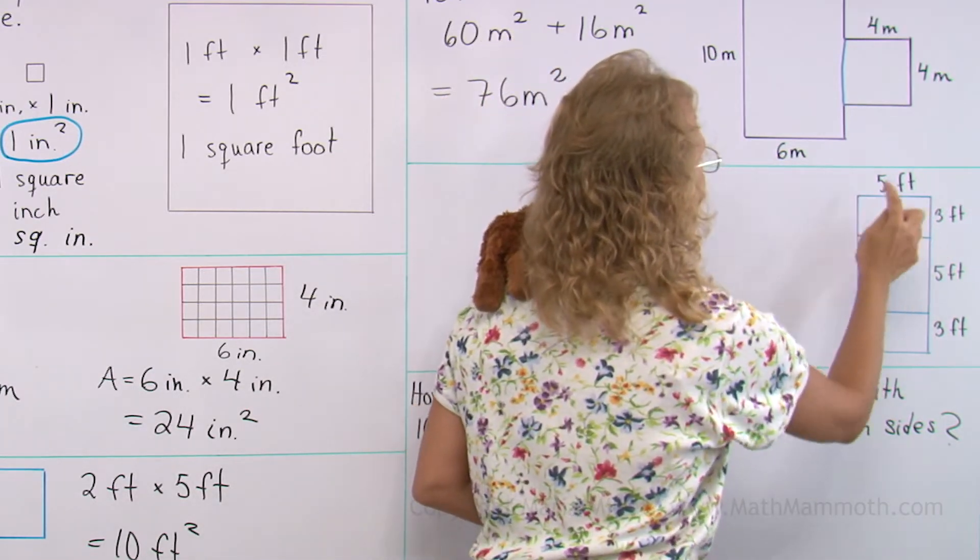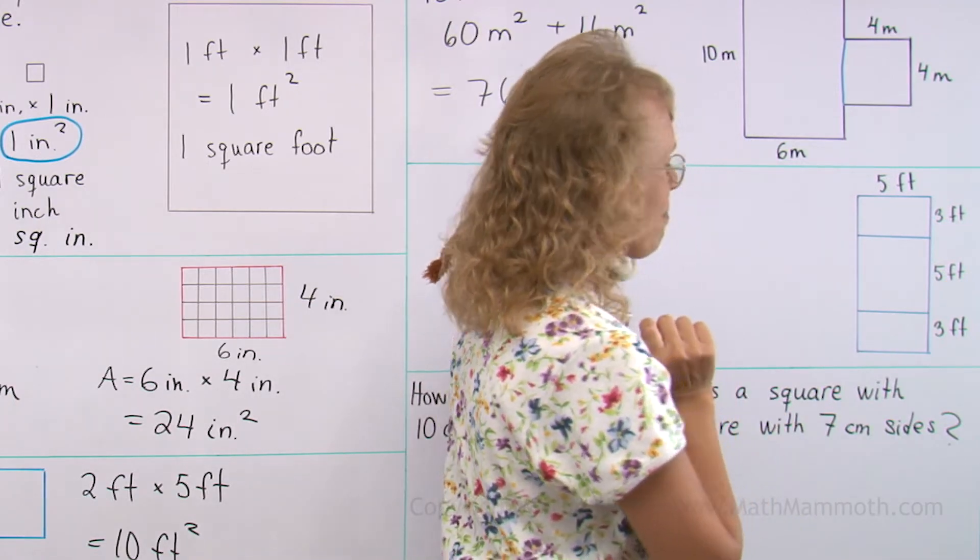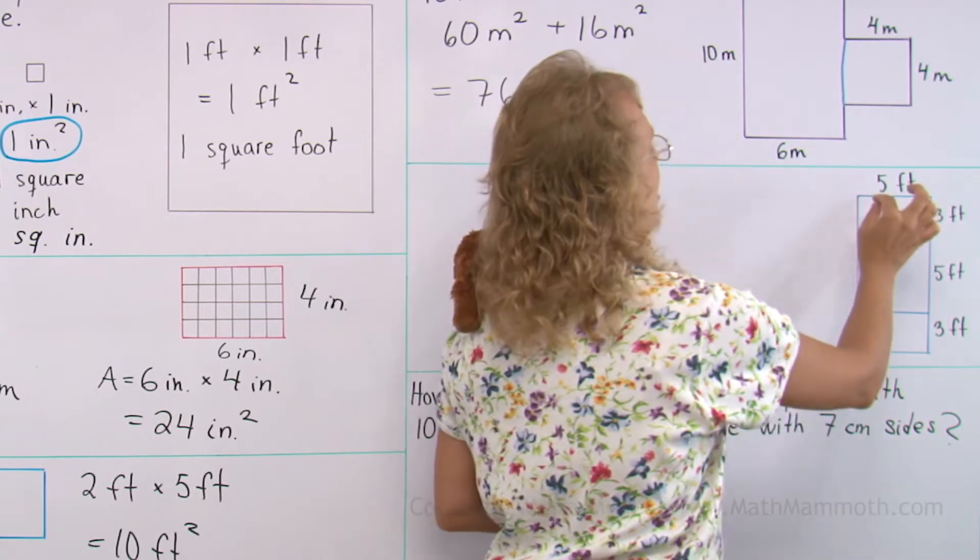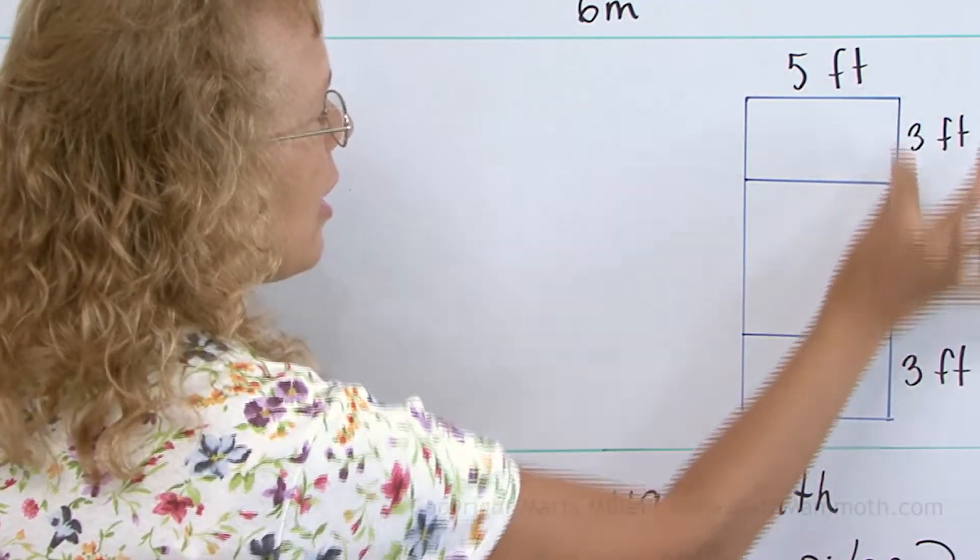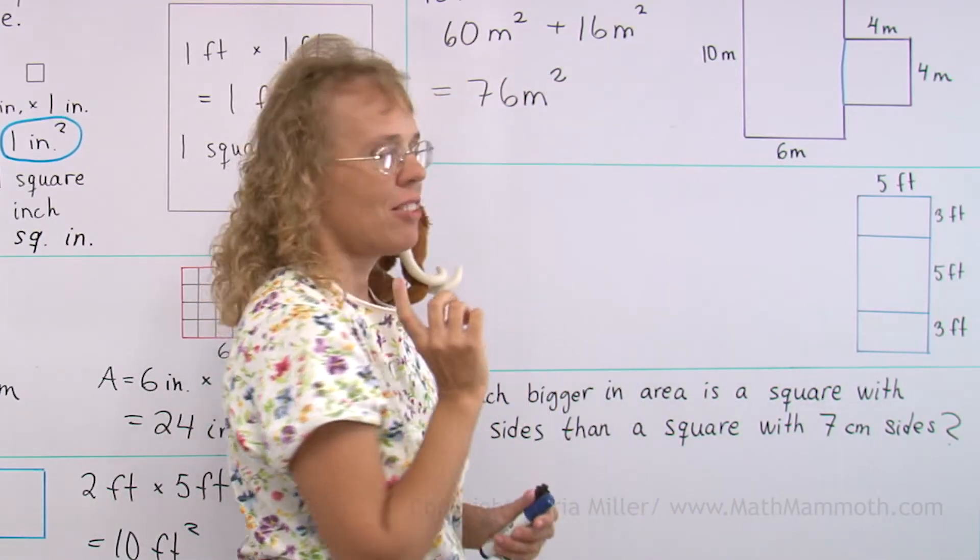We could find the area of this rectangle and of this and of this and add. Or we can just find the area of the whole rectangle, right? It will be 5 feet times all of this length. So you add 3 feet, 5 feet, 3 feet.